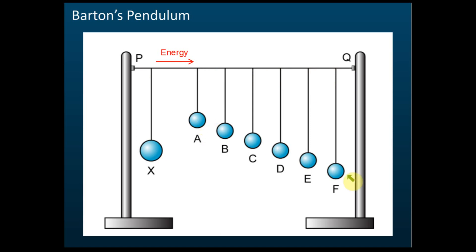Out of these six pendulums, one of them will oscillate with maximum amplitude — that should be pendulum D. That is because X and D have the same length. The length must be measured from the center of the pendulum bob, not from the lowest point. If they have the same length, then they have the same natural frequency. Even though the pendulum bobs have different masses, it doesn't matter — as long as the length is the same, the natural frequency is the same.